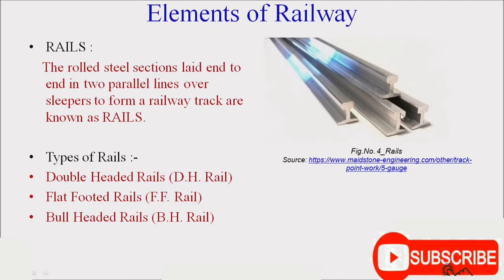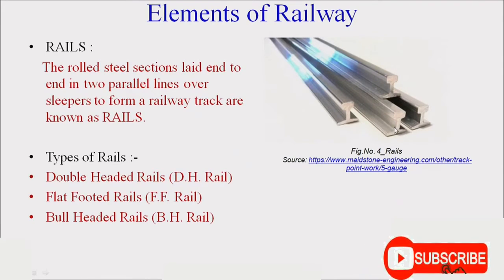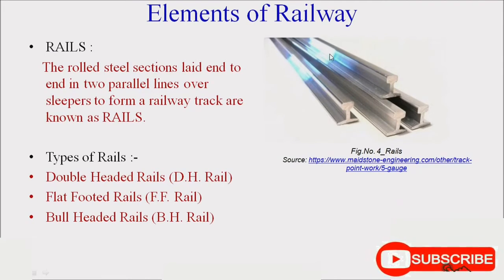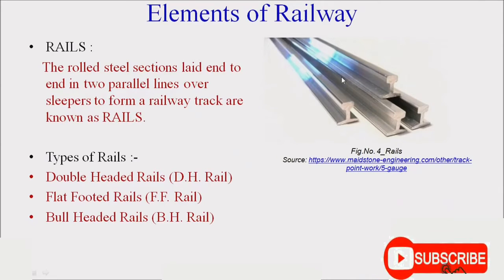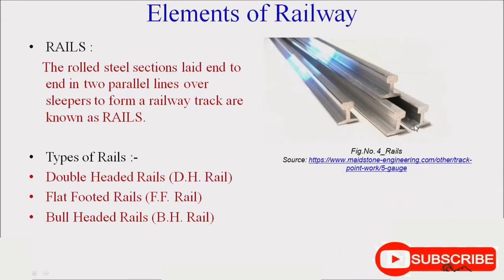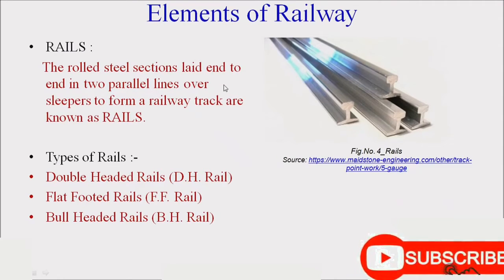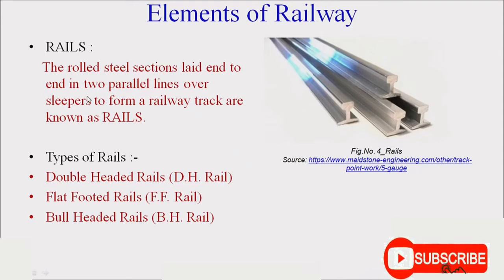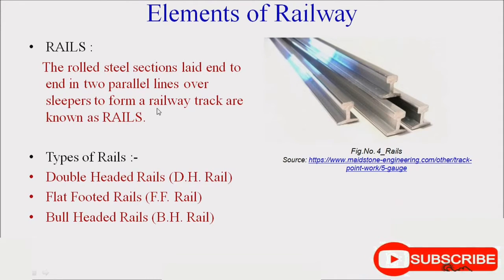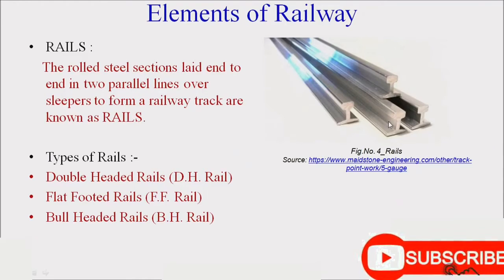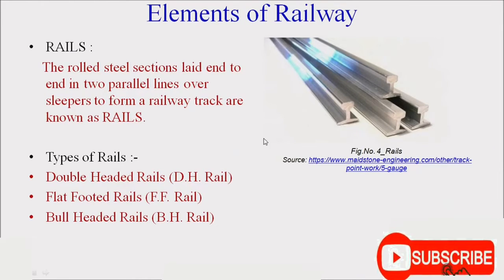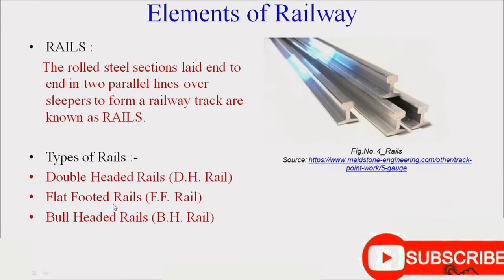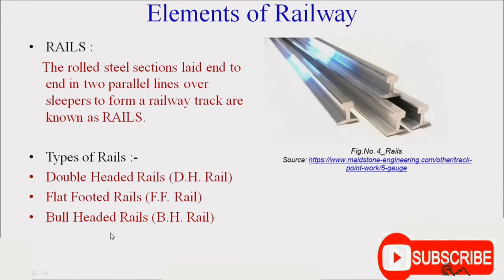The next element is rails. Normally we see only the uppermost part of the rails. These rails are made up of steel sections — rolled steel sections laid end to end in two parallel lines over sleepers to form a railway track. There are various types of rails: double-headed rails, flat-footed rails, and bull-headed rails.